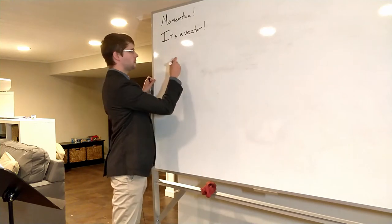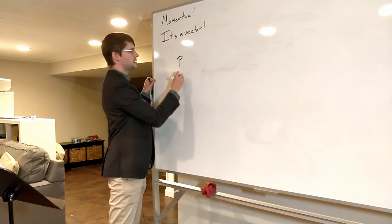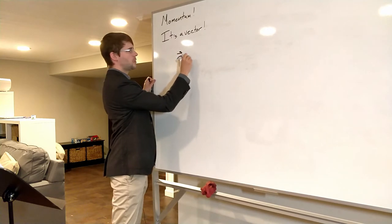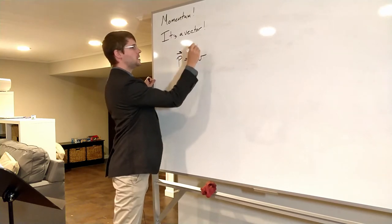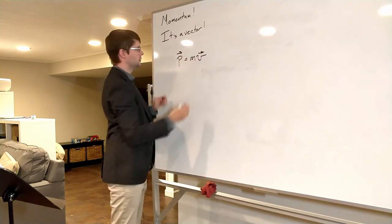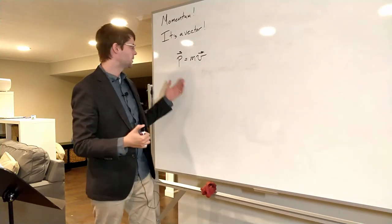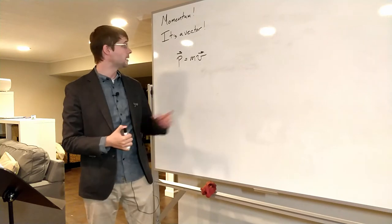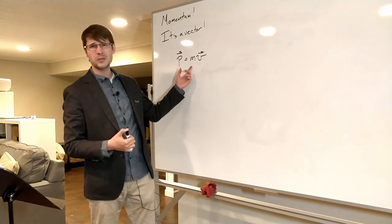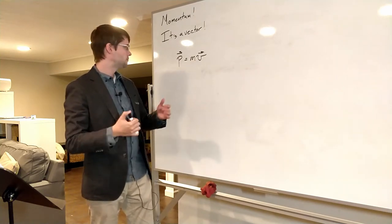If you remember, momentum is a vector and we use the symbol P for momentum because momentum starts with a P. Actually it has to do with an old word, pedra or something, that has to do with force, but also M was already used for mass so we use P.